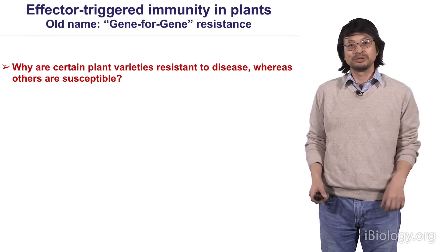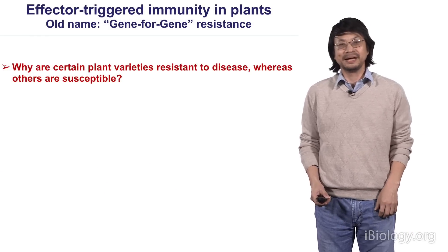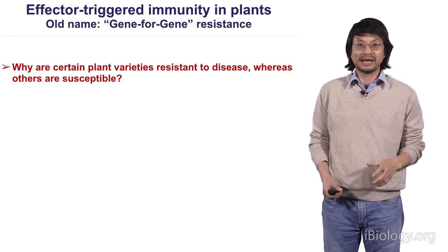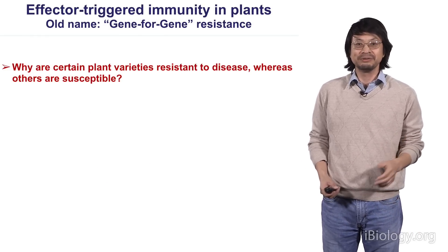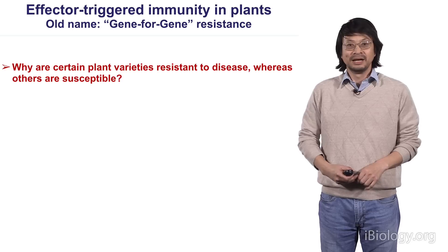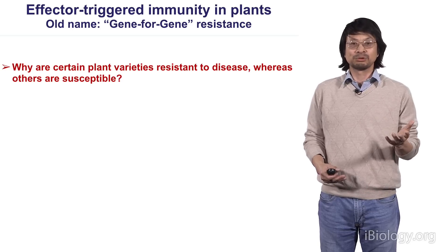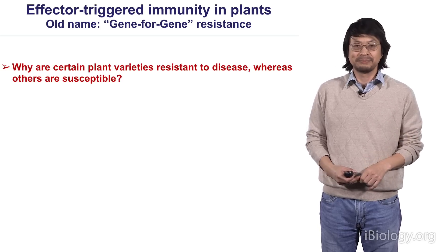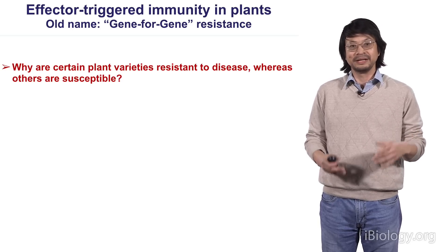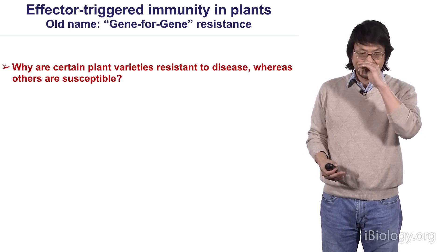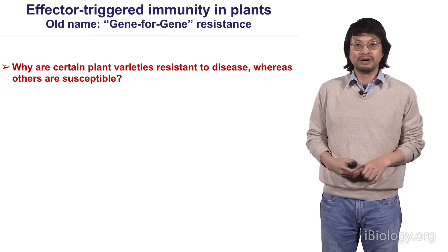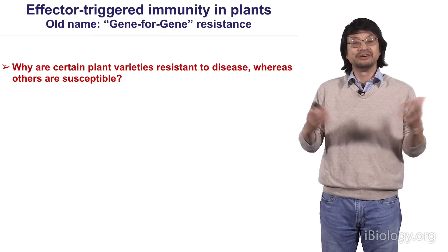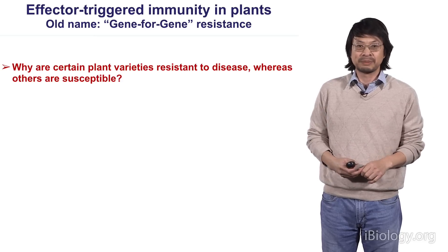What is effector-triggered immunity in plants? There's an older name for this called gene-for-gene resistance. This describes a phenomenon probably noticed by farmers and many people over thousands of years.